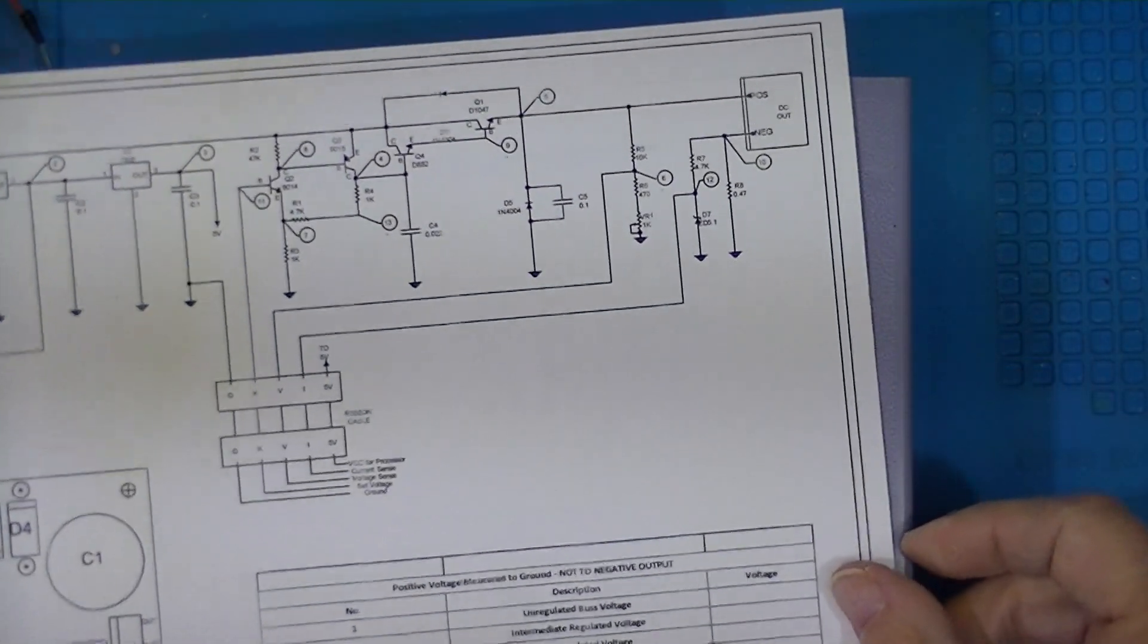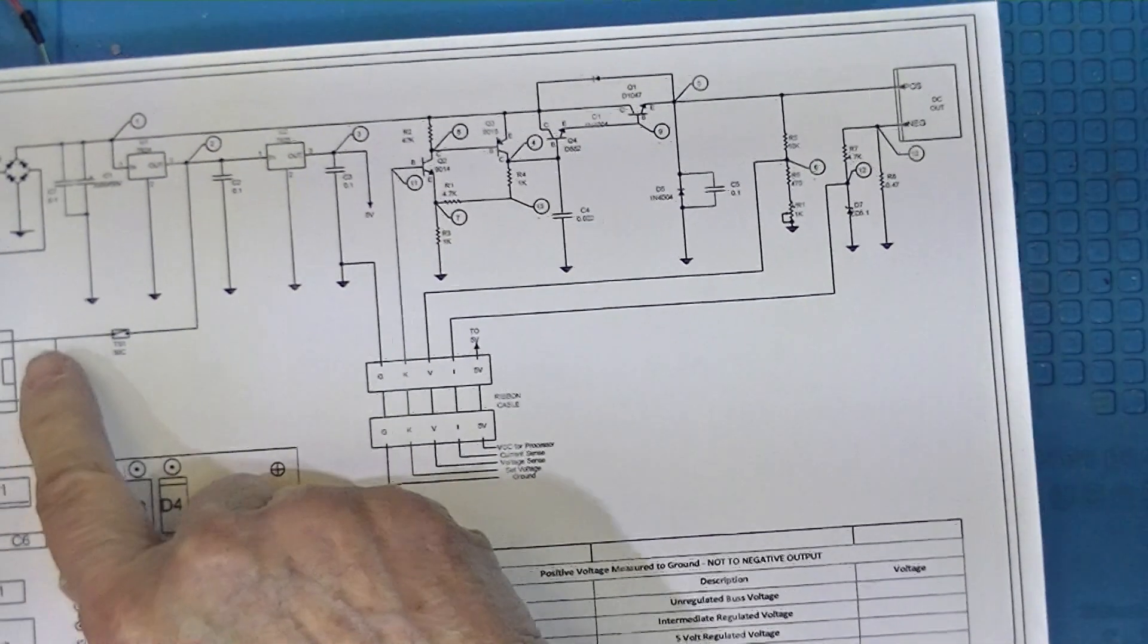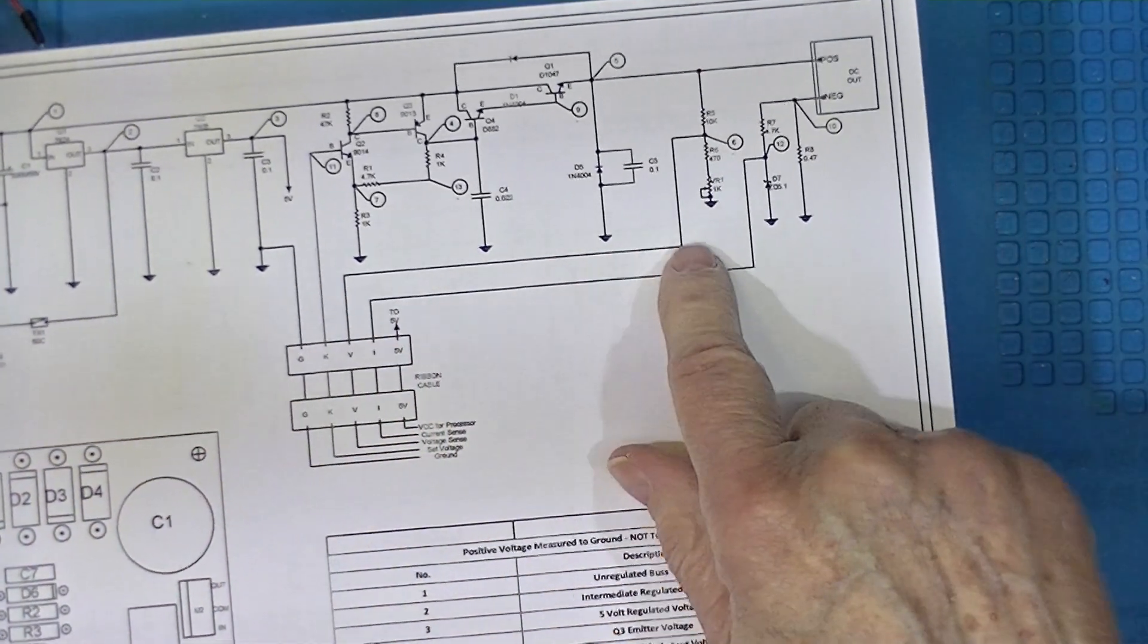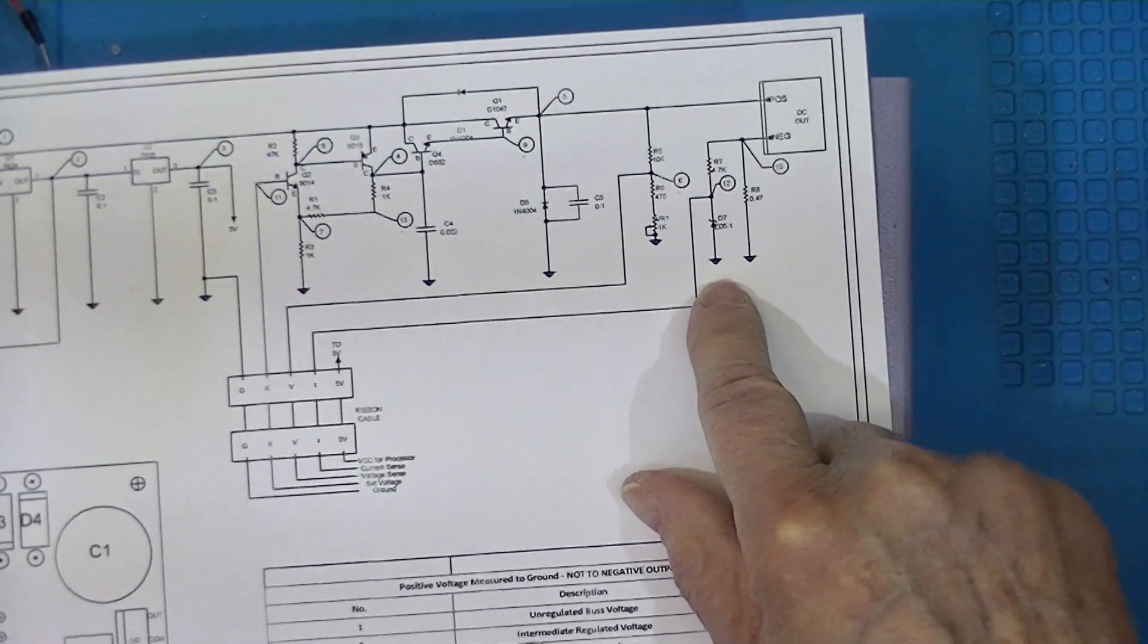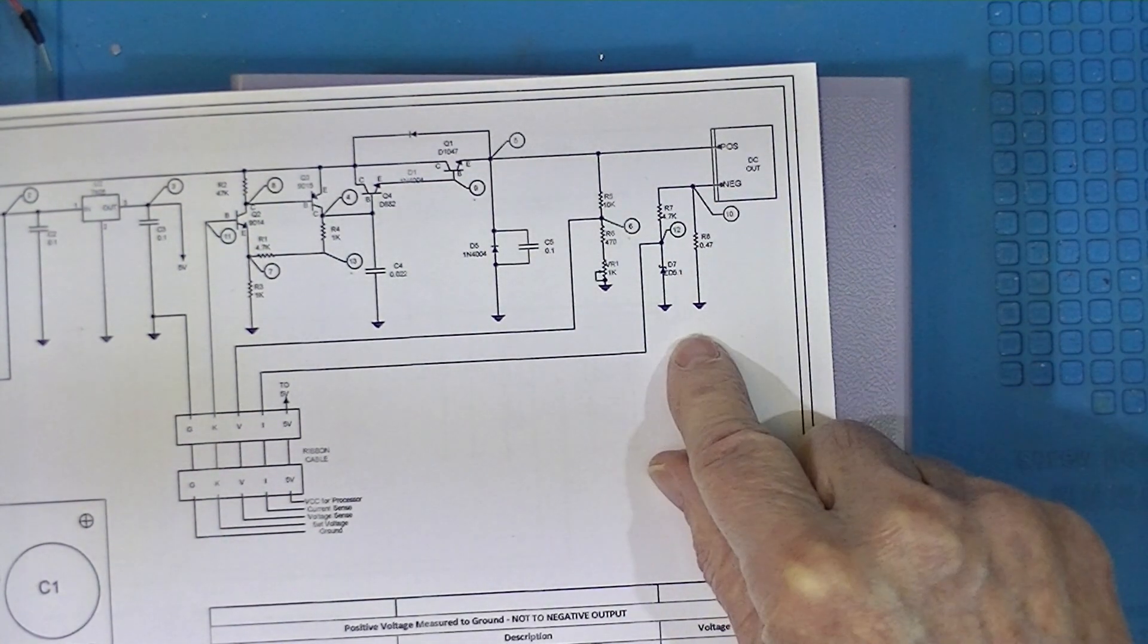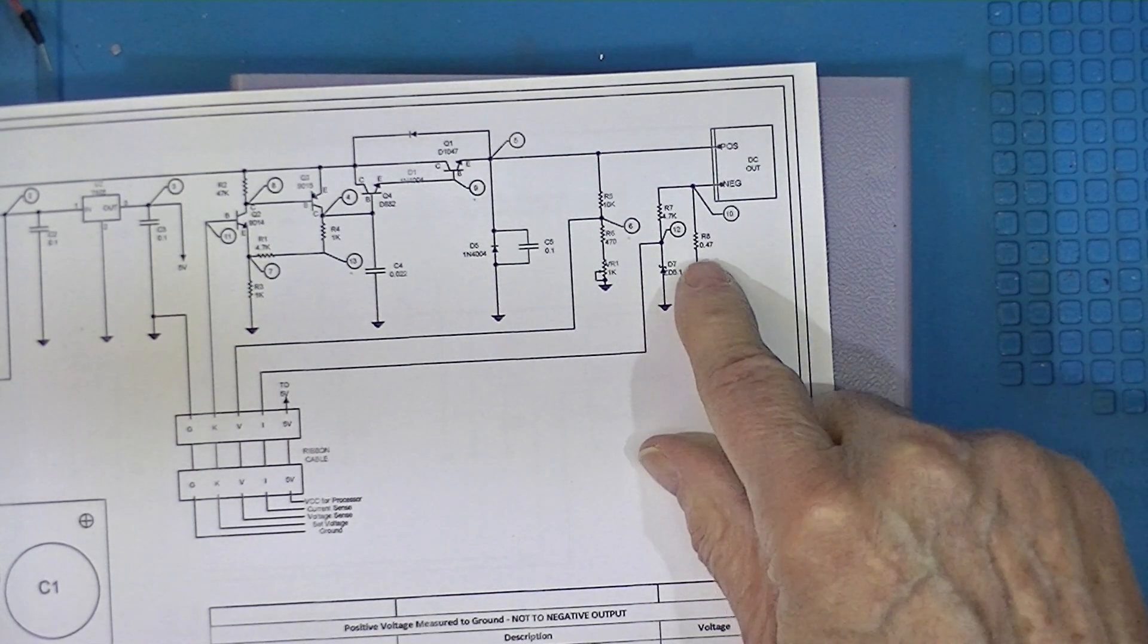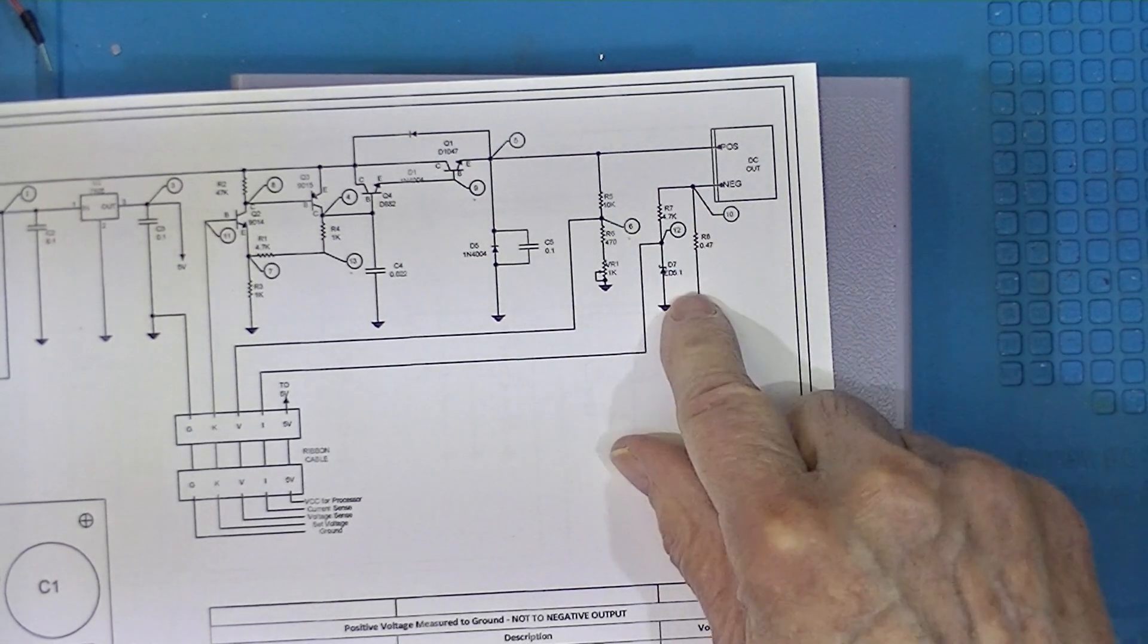One thing you need to know about this power supply is that a whole bunch of internal components reference to what they call ground. That is not the negative output of the power supply. The negative output of the power supply is offset by 0.47 ohms.